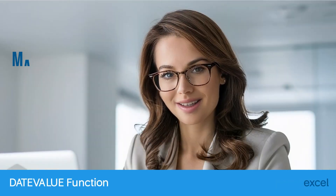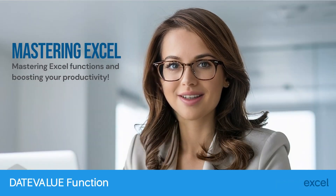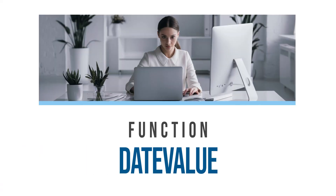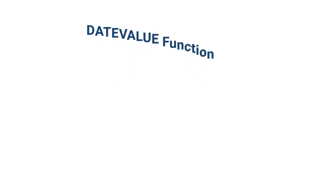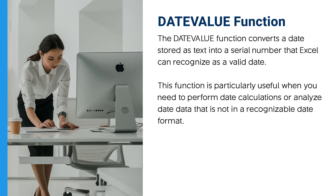Welcome back to SmartLink Basics, your go-to source for mastering Excel functions and boosting your productivity. In today's tutorial we're going to explore the DATEVALUE function in Excel. The DATEVALUE function converts a date stored as text into a serial number that Excel can recognize as a valid date. This function is particularly useful when you need to perform date calculations or analyze date data that is not in a recognizable date format. Let's dive in.